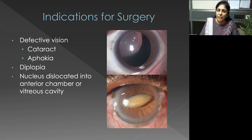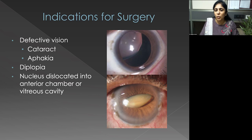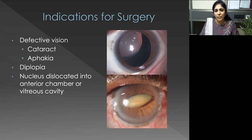Starting with indications for surgery in patients with lens subluxation: the indications include patients who have defective vision even with a gross subluxation — either because of the cataract or their phakic status — double vision, or a nucleus in the anterior chamber or in the vitreous cavity.